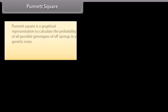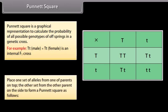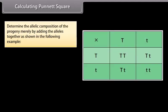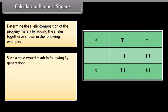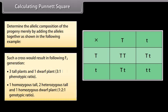Punnett square is a graphical representation used to calculate the probability of all possible genotypes of offspring in a genetic cross. For example, a TT male crossed with a Tt female. Place one set of alleles from one parent on top and the other set from the other parent on the side. The cross results in the following F2 generation: three tall plants and one dwarf plant — a 3:1 phenotypic ratio; and one homozygous tall, two heterozygous tall, and one homozygous dwarf plant — a 1:2:1 genotypic ratio.